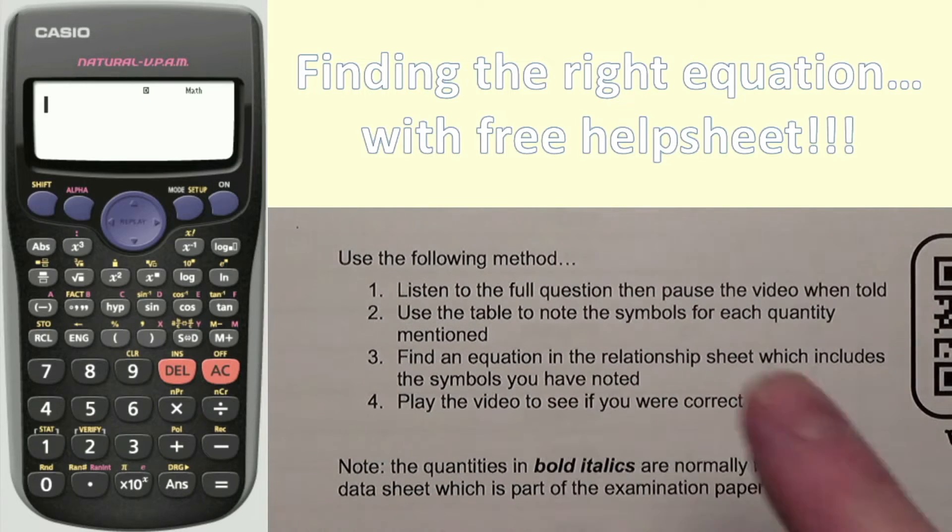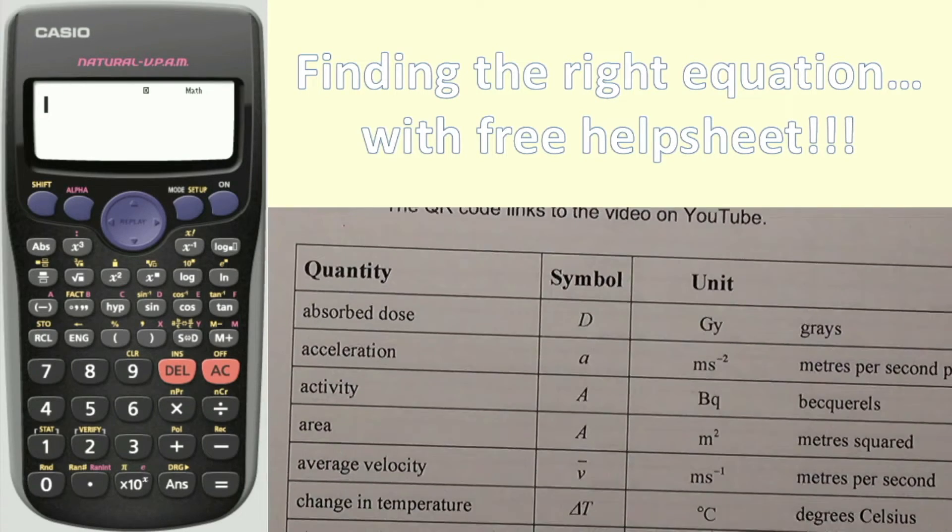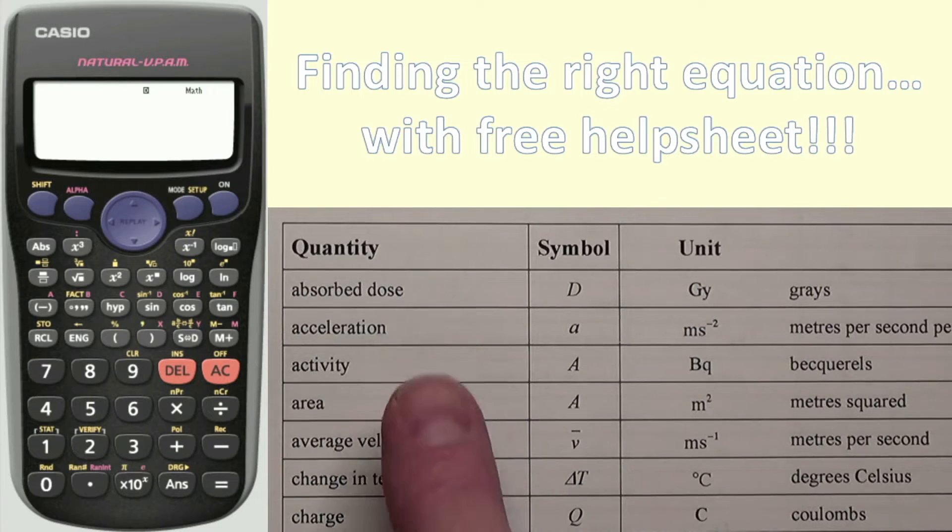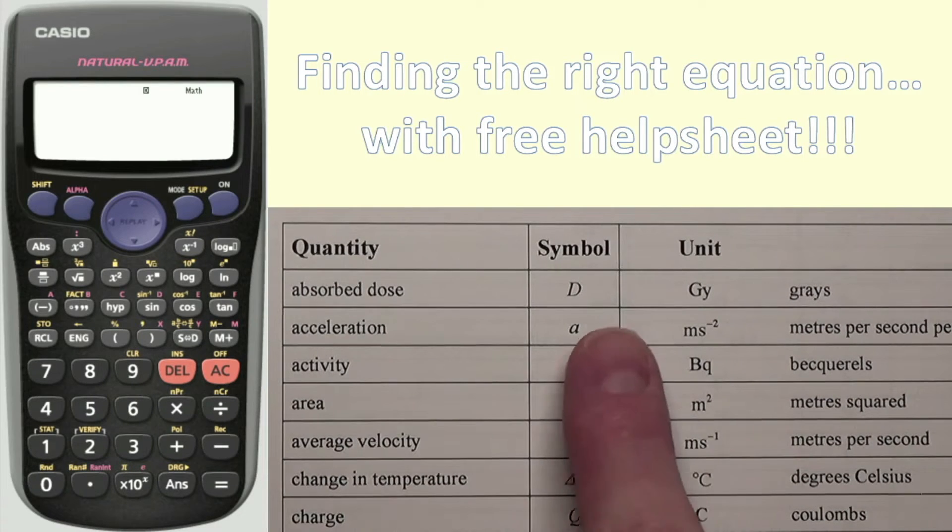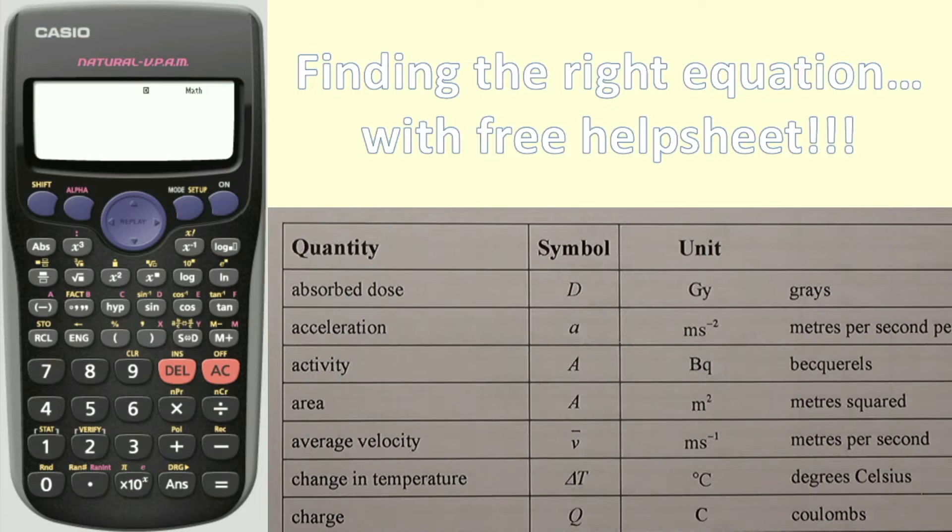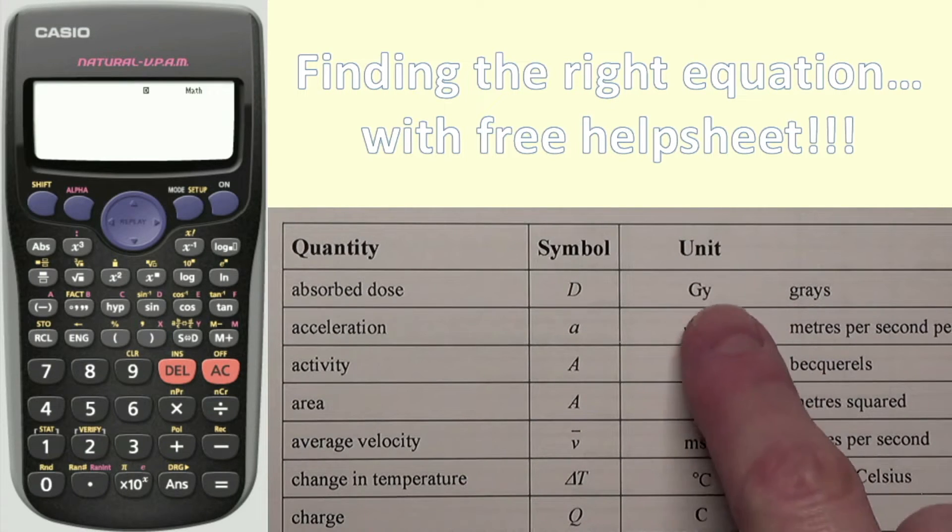There are instructions, and most importantly, a table which gives you all the different quantities that we use in National 5 Physics, as well as the symbol that's used in the relationship sheet, in other words the equations, and the unit.